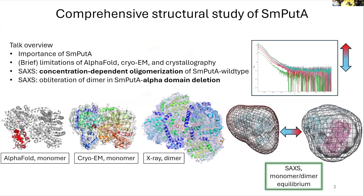I'll start with a little background on SmPutA. I know this is a SAXS workshop, but I wanted to talk about some of these other techniques and their limitations, and how SAXS data really fills the gaps in some cases. With the SAXS, I'll cover two parts: the concentration-dependent polymerization of the wild-type full-length enzyme, and a domain deletion construct and its impact on dimerization.